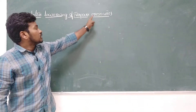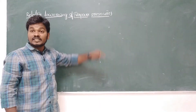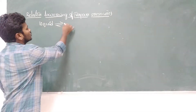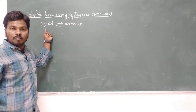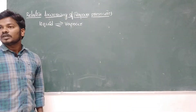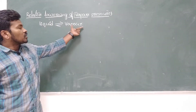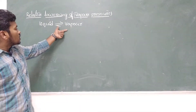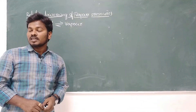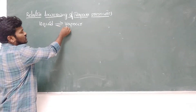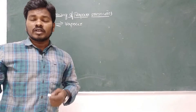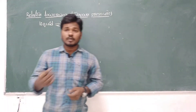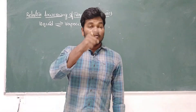Vapor pressure — the name itself indicates the pressure exerted by the vapor. When liquid is boiling, it converts into vapor state. Initially, not all the liquid converts into vapor state. Some molecules convert into vapor state and exert some pressure. Whenever they are exerting pressure in equilibrium with the liquid state, that is called vapor pressure.